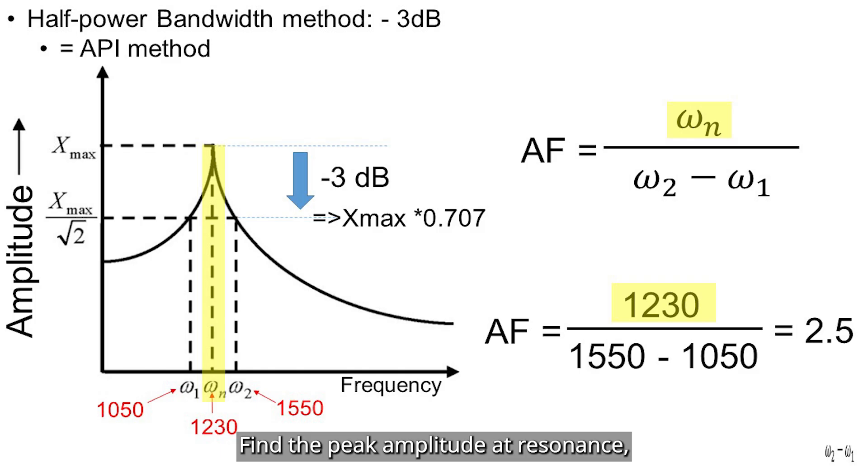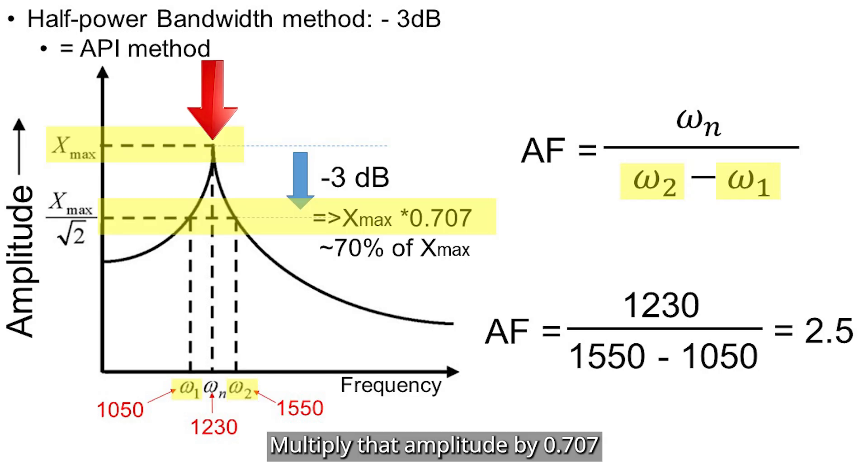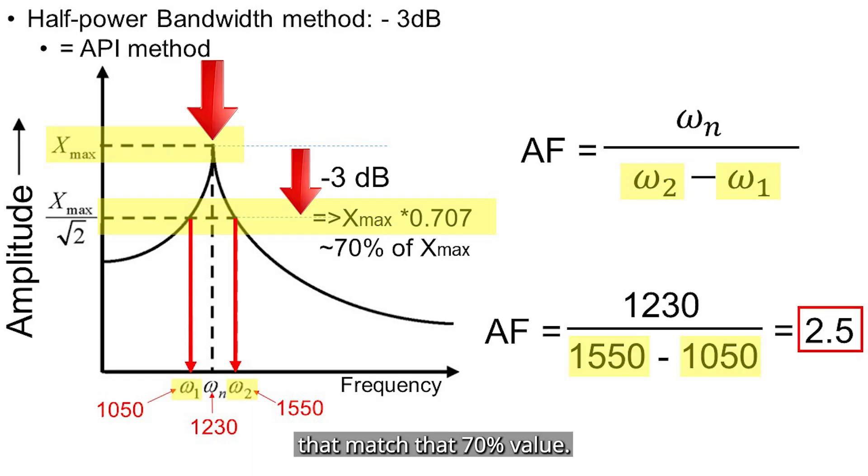Here is how it works. Find the peak amplitude at resonance, which is omega n. Multiply that amplitude by 0.707 to get 70% of the peak. Then find the two frequencies, omega 1 and omega 2, on either side of the peak, that match that 70% value. Finally, calculate the amplification factor using the following equation here.